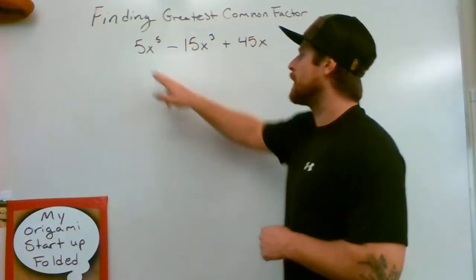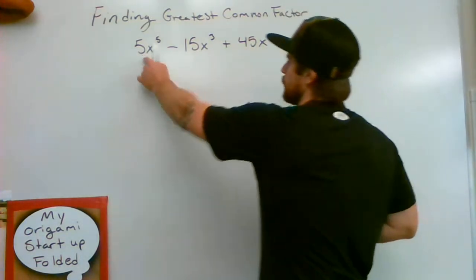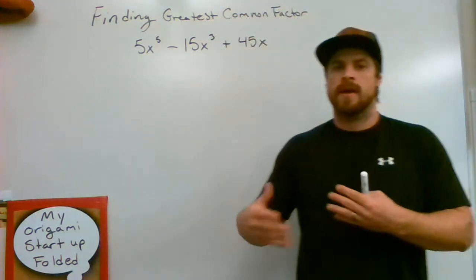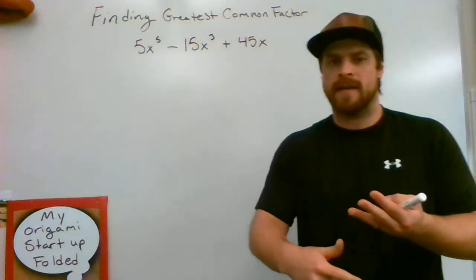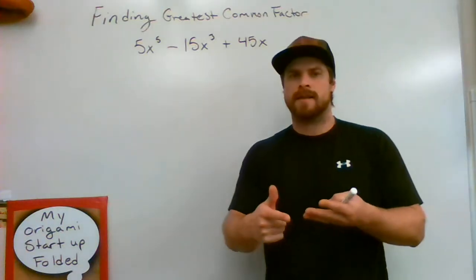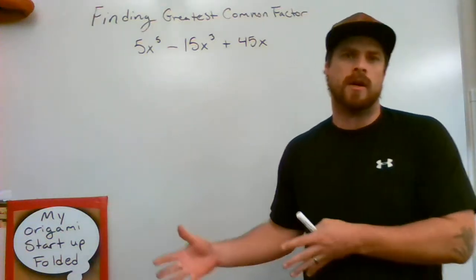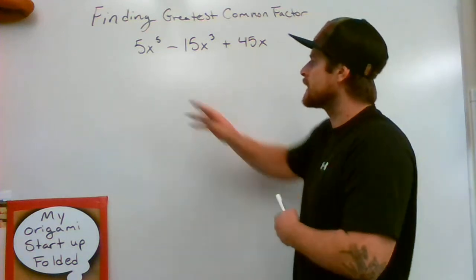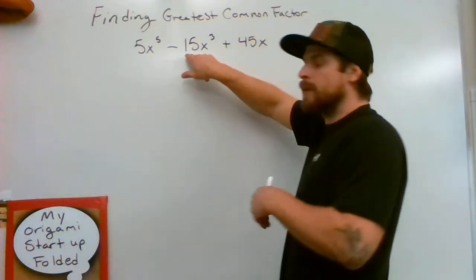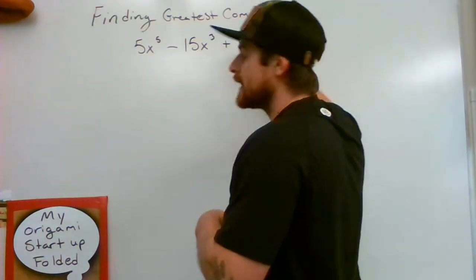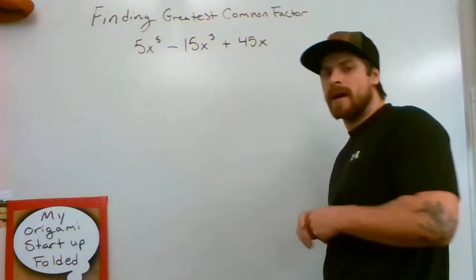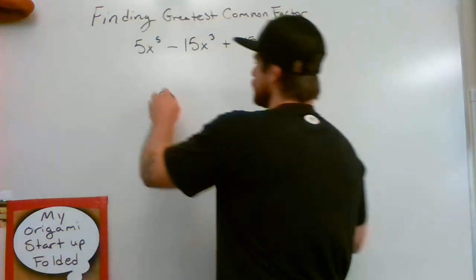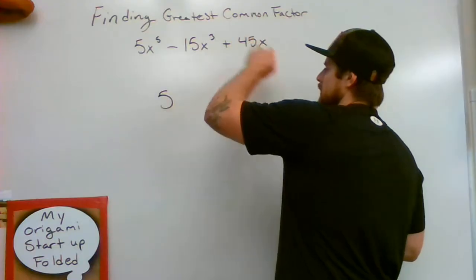So I have a 5, a 15, and a 45. You're going to look first at the numbers, the coefficients to each one of these terms: 5, 15, 45. Those numbers should stand out to you as mathematicians as what do they have in common. What is the greatest common factor of each one of those? And that's going to be 5. 5 makes a 5, 3 fives would make a 15, and 9 fives would make a 45. So I'm going to write down 5 first off, because 5 is my greatest common factor for each one of these.